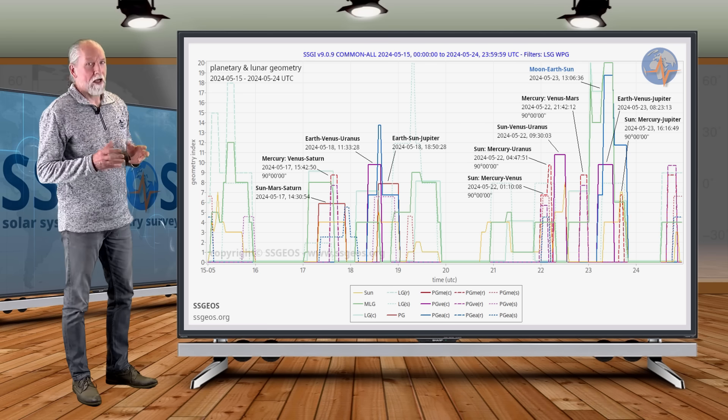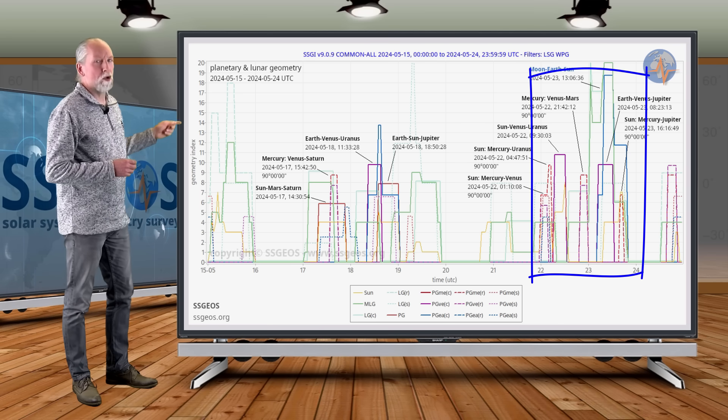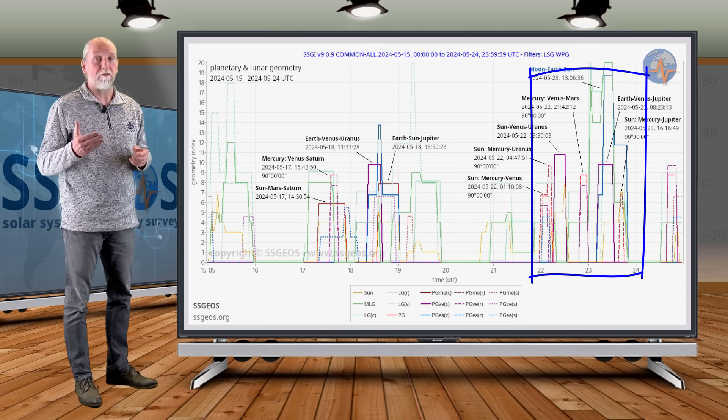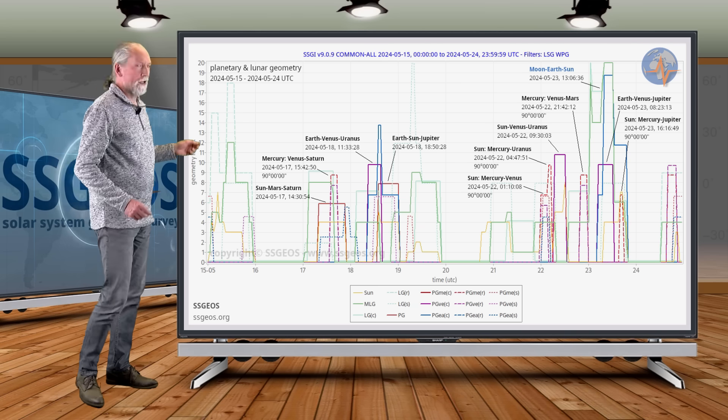Then we're going to have a really critical convergence on 22-23 May. That may really result in some big seismic activity, possibly high seven, maybe even eight magnitude. So let's have a look.